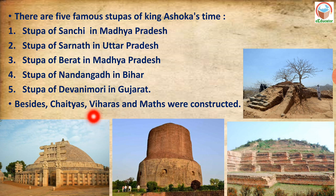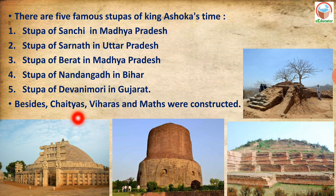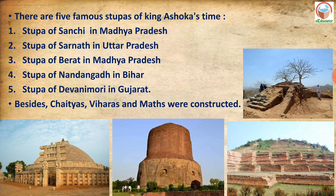Besides Stupas, Ashoka also constructed Chetiyas, Viharas and Mutt. Chetiyas are places where the worship of Lord Buddha is done. Viharas are a kind of dwelling place. During the time of Ashoka, Chetiyas, Viharas and Mutt were all constructed.